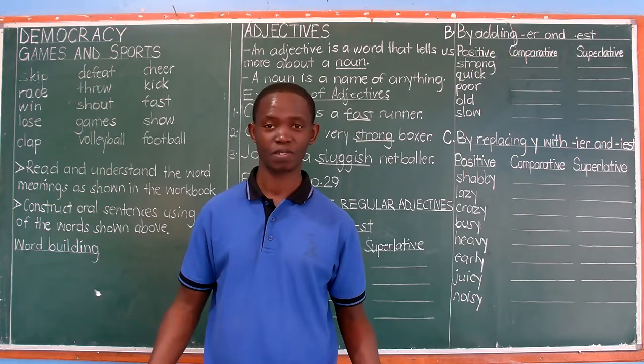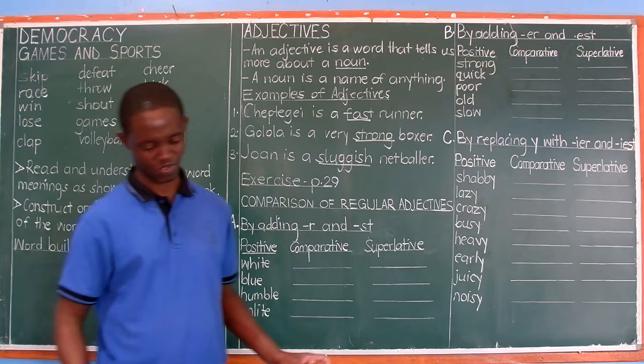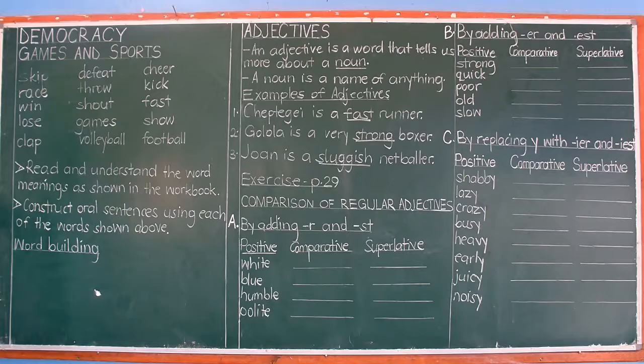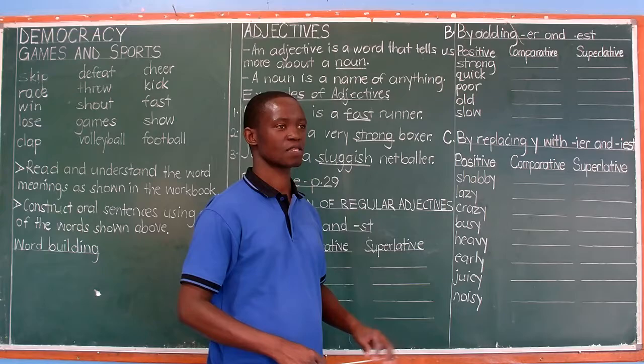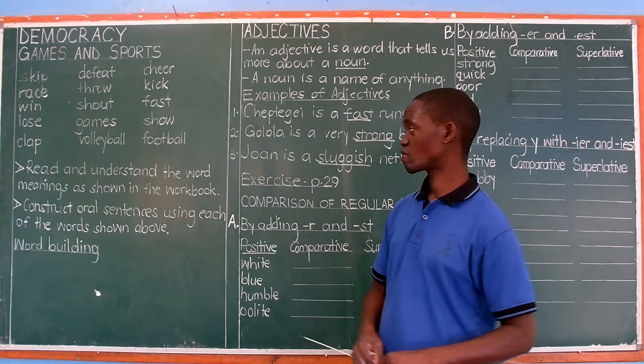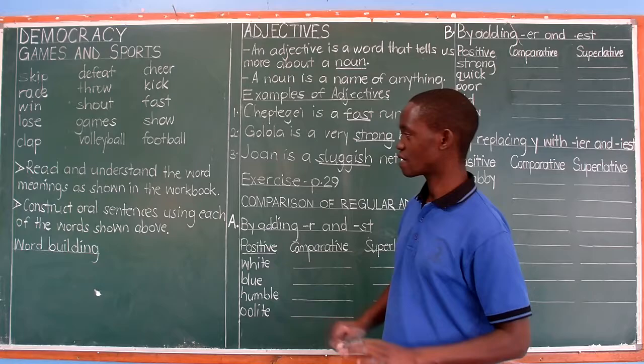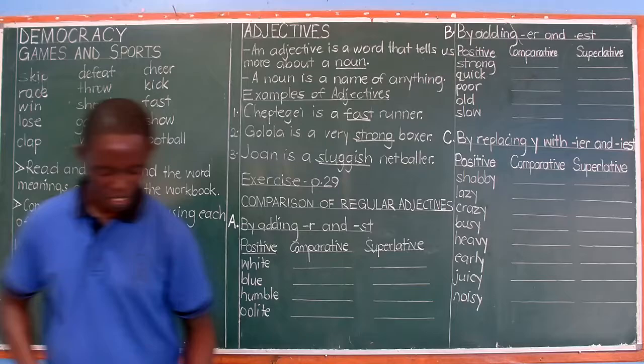Welcome once again to this new lesson of P4, term 3, 2021. We are in the topic known as democracy, as you see on the board. Our topic is democracy, and the subtopic under democracy for now is games and sports. Whatever we discuss today will be connected to games and sports, plus other grammar topics.